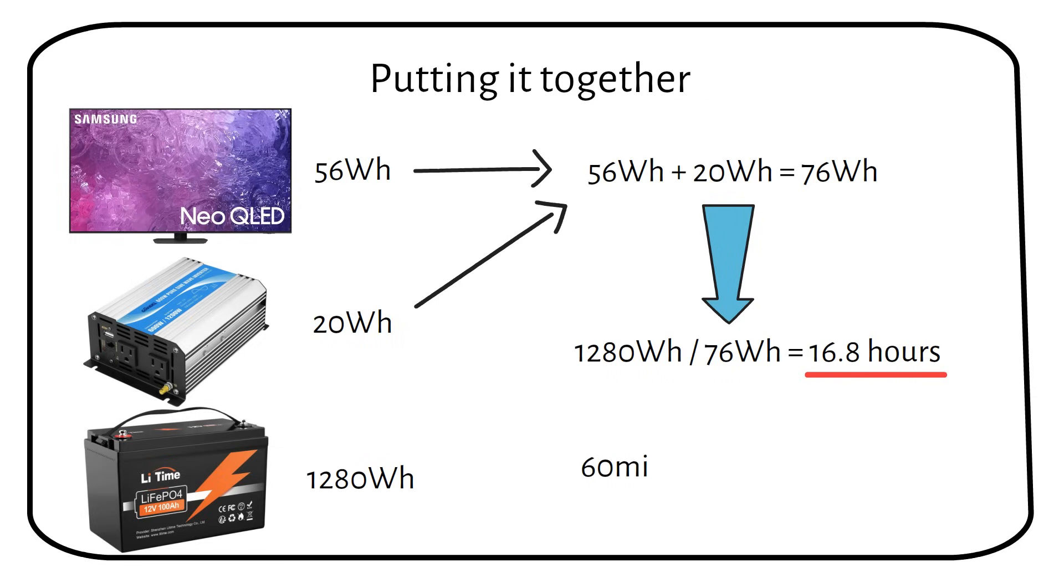To find out how many minutes 0.8 is, we use the following formula. We get 16 hours and 48 minutes. You can repeat all these calculations with your own values. Larger inverters or hybrid inverters use more idle power than 20 watts.